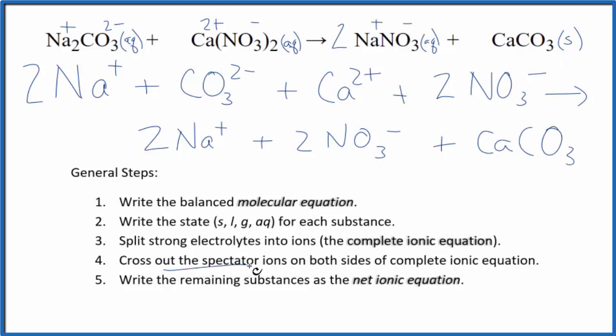Now we can cross out spectator ions. They'll be on both sides of the equation. They don't really change, so we're not interested in them. We have two sodium ions here in the reactants, two in the products. Let's get rid of those. We have two nitrate ions here, and two nitrate ions here in the products. We can get rid of those.